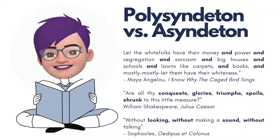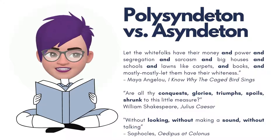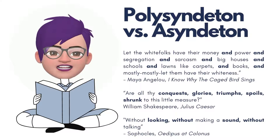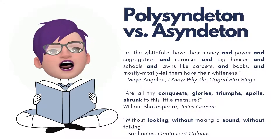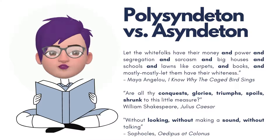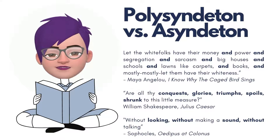Polysyndeton is a stylistic device in which several coordinating conjunctions are used in succession in order to achieve an artistic effect. For example, in 'I Know Why the Caged Bird Sings,' Maya Angelou writes: 'Let the white folks have their money, and power, and segregation, and sarcasm, and big houses, and schools, and lawns like carpets, and books, and mostly, mostly, let them have their whiteness.' You can see how the conjunction 'and' has been used in repeating instances to create that artistic effect.